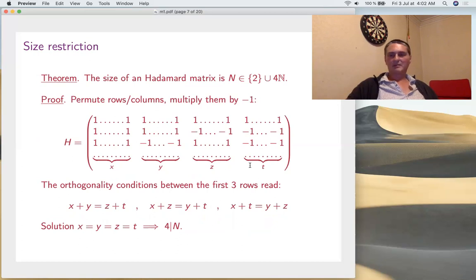Now, the first observation is that the size cannot be anything - it must be a multiple of four unless it's two. Let's assume it's at least three. I want to prove it's a multiple of four. Just permute the columns, multiply them by minus one, to arrange from the beginning to be like this - four kinds of blocks. If we denote by x, y, z, t the length of these blocks, you write down the orthogonality conditions between the first three rows - you get three equations. The solution is x, y, z, t must be equal. Since the size is the sum of x, y, z, t, it's a multiple of four.